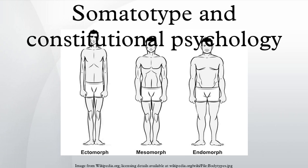Sheldon's somatotypes and their associated physical and psychological traits can be characterized as follows. Ectomorphic: characterized as linear, thin, usually tall, fragile, lightly muscled, flat-chested, and delicate. Described as cerebratonic — inclined to desire isolation, solitude, and concealment — and being tense, anxious, restrained in posture and movement, introverted, and secretive.